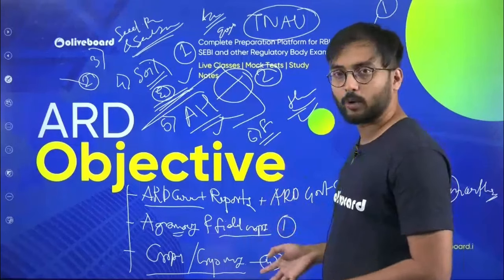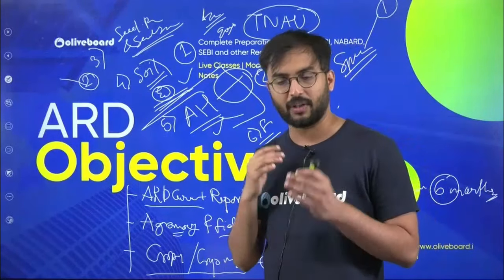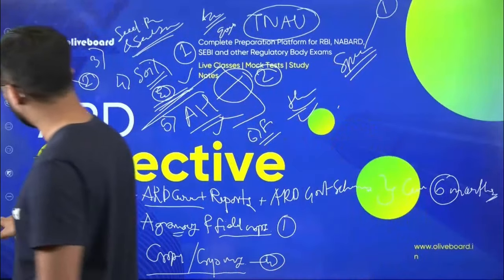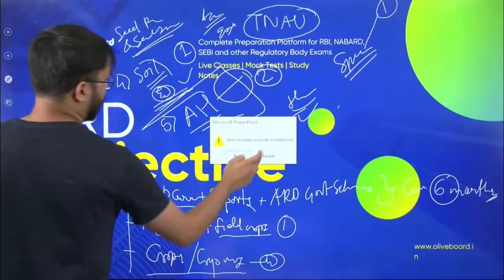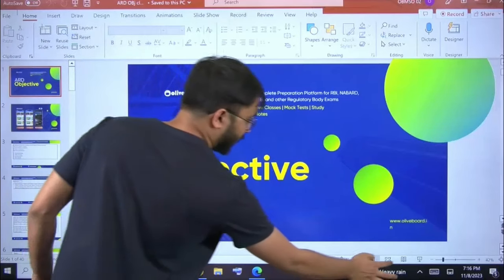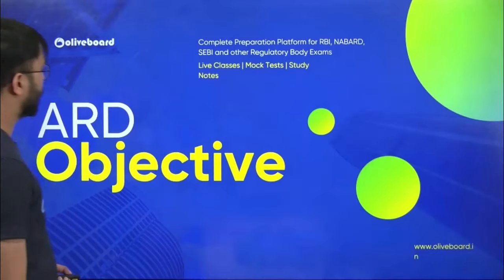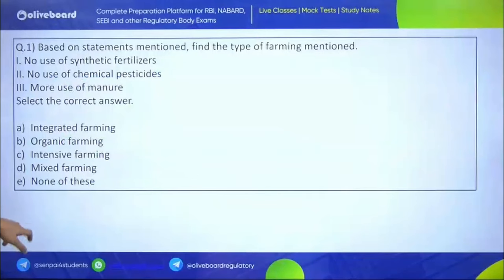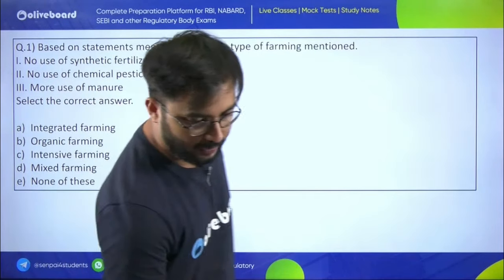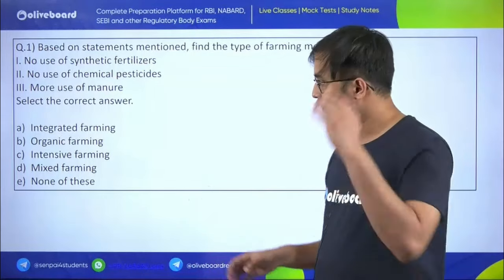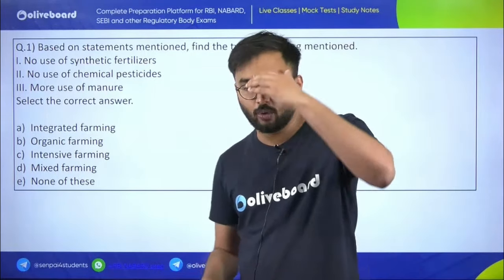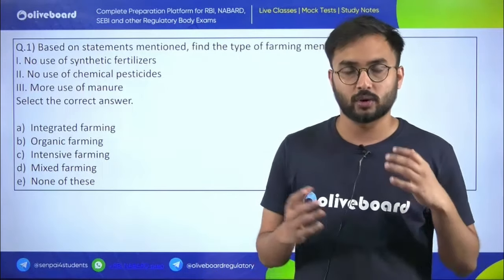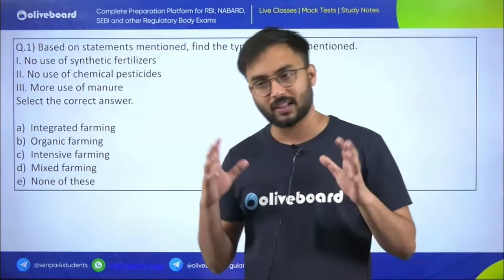This covers the ARD objective overview. Now let us move to our practice questions. For many students time is very limited, so within the stipulated time we will discuss important questions. Based on the statement given, find the type of farming mentioned.